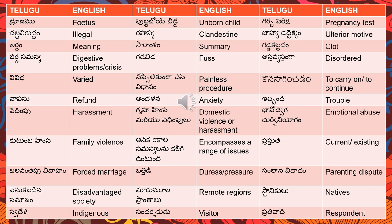'Encompasses a range of issues' — aneeka rakala; aneeka rakala means a range. The exact verb form — untundi or undatam — will depend on how the sentence is framed, as per the dialogue tense. 'Current/existing' — praatuta.